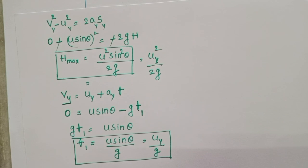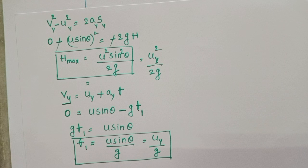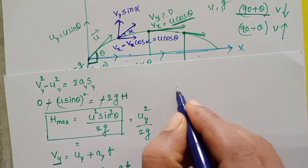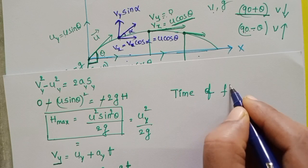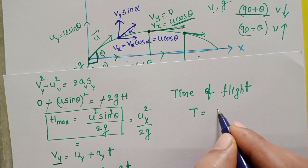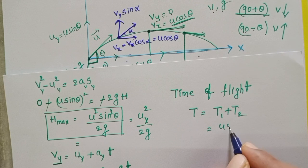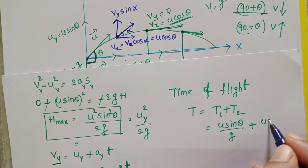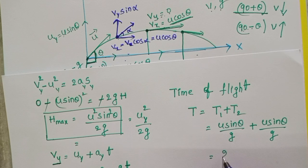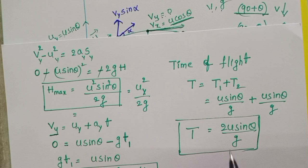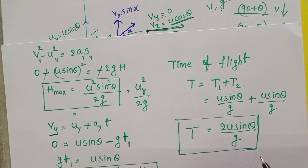Time of ascent equals time of descent, where time of descent is the time taken to fall from maximum height to the ground. This equality holds only when air resistance is zero — our assumption is that air resistance is completely negligible. Time of flight = time of ascent + time of descent = u sin theta/g + u sin theta/g = 2u sin theta/g. In one-dimensional motion it is 2u/g, but here it is 2u sin theta/g.